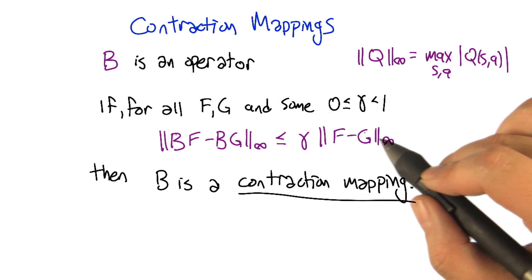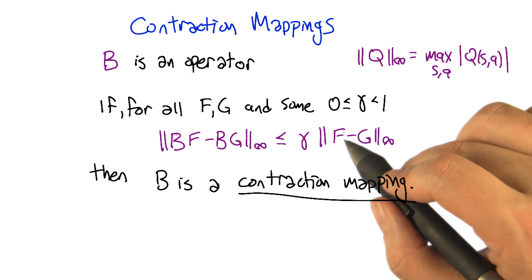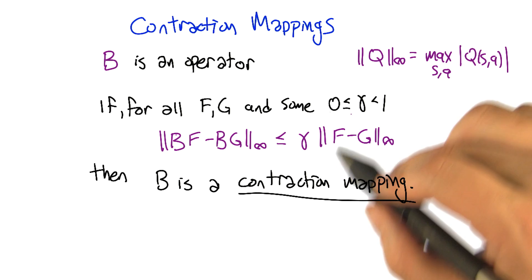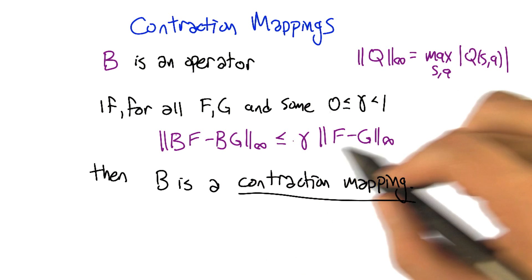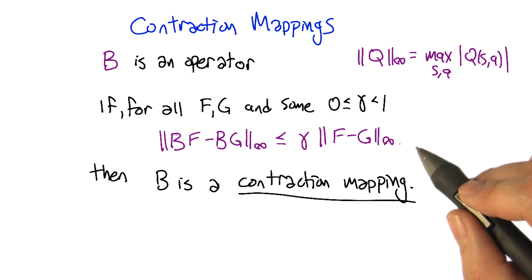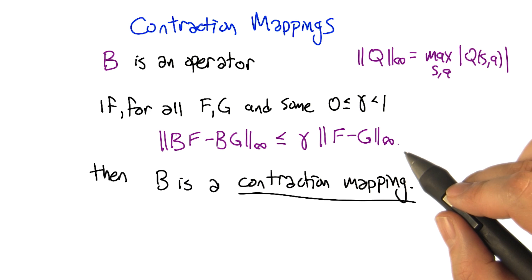Right, that's right. So this max norm is computing for the specific value function that it's given where the biggest value is, the biggest absolute value is. And that could be different on this side of the equation from this side of the equation. There's no reason that it needs to be the same over and over again.